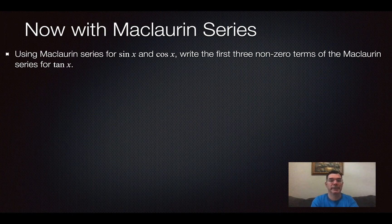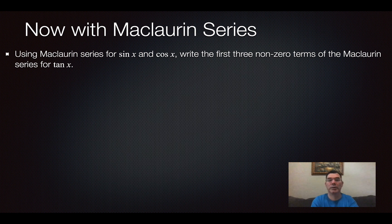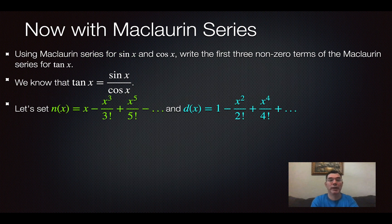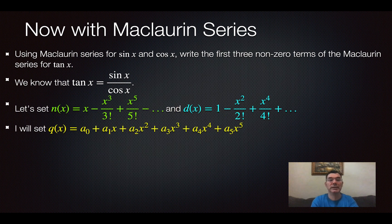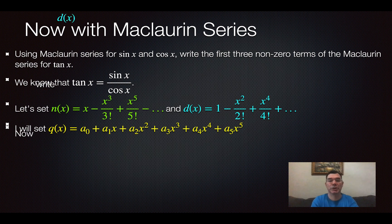So now we're doing this with Maclaurin series. We're starting with sine x and cosine x, and we're going to write the first three non-zero terms of the Maclaurin series for tangent of x. I know that tangent of x is sine x over cosine x. So my numerator is going to be the Maclaurin series for sine x, and my denominator is going to be my Maclaurin series for cosine x. My quotient is going to be something up to x⁵. I need the first three non-zero terms, and I'm noticing that both the numerator and denominator don't have every exponent of x in them. So I'm going a little bit further than I might need to get three non-zero terms.